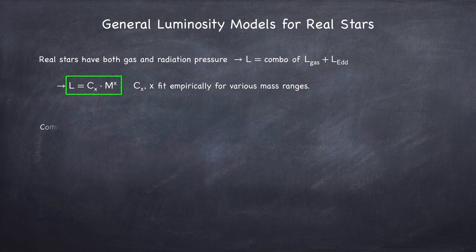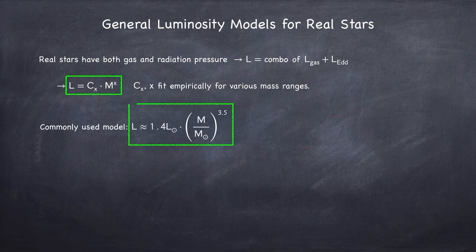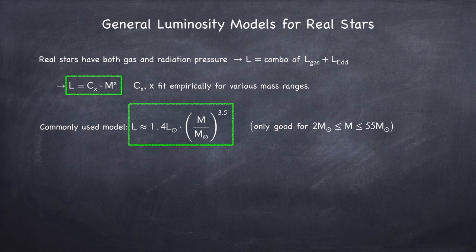The most commonly used model is that L equals about 1.4 solar luminosities times the mass in units of solar masses raised to the 3.5.